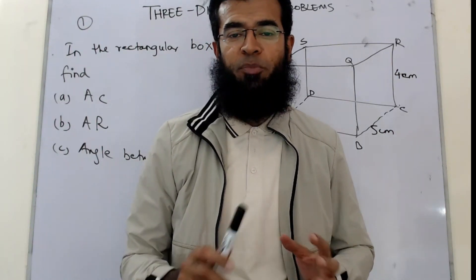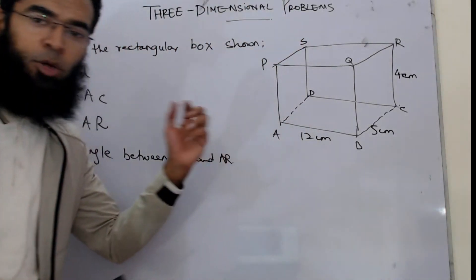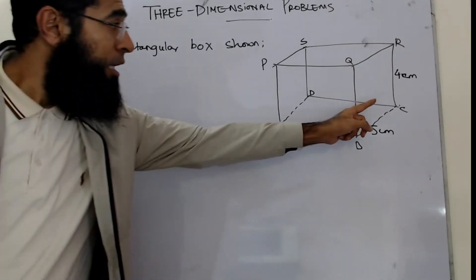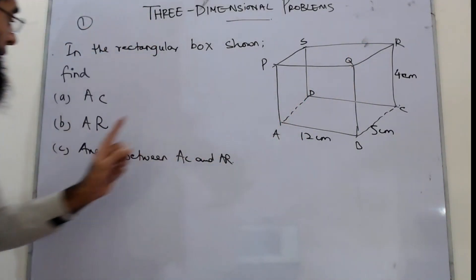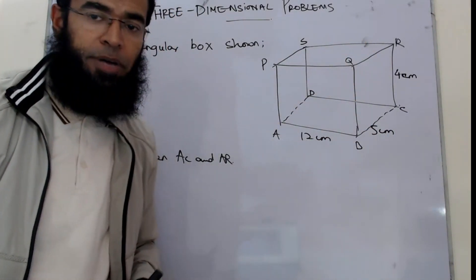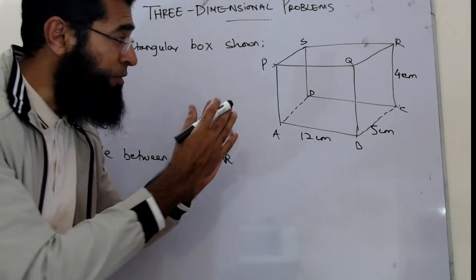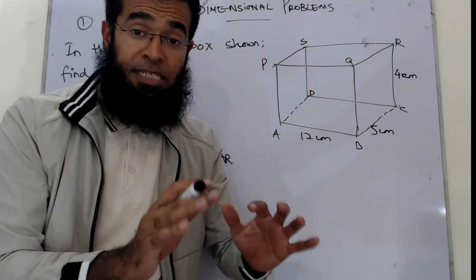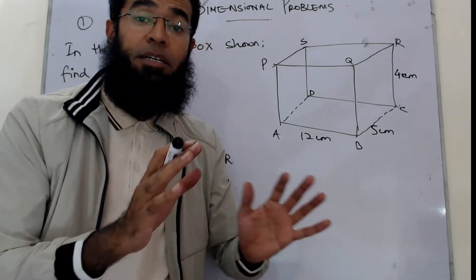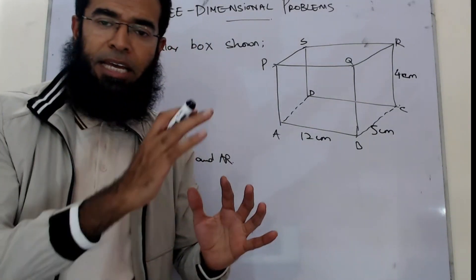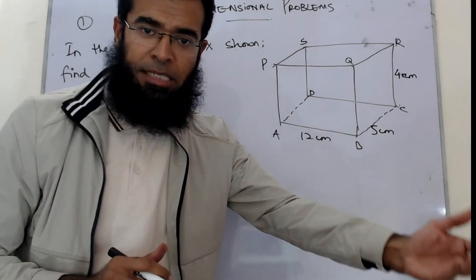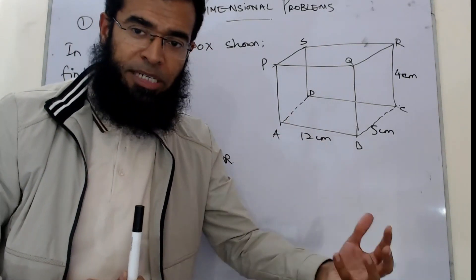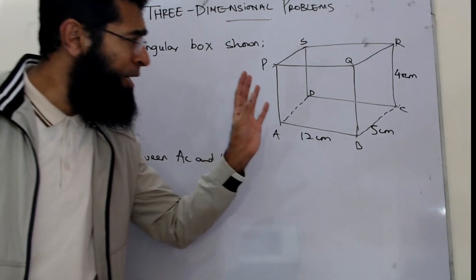Let's discuss some three-dimensional problems of trigonometry. Let's look at this question: in the rectangular box shown, find AC, find AR, and the angle between AC and AR. This is an application of right-angle triangles — that's what most 3D trigonometry problems come down to — so we'll apply those concepts here.